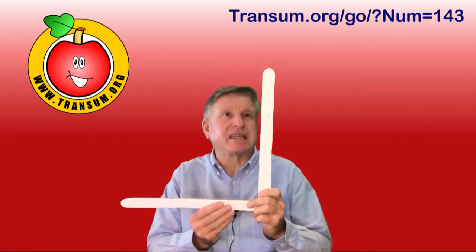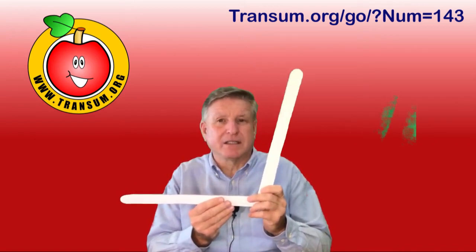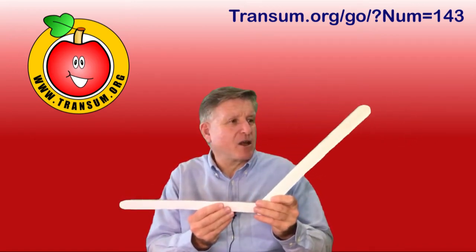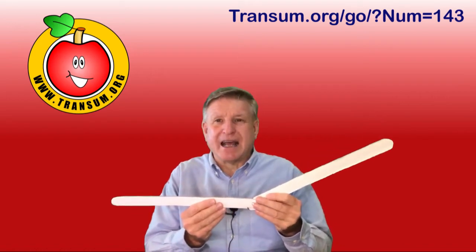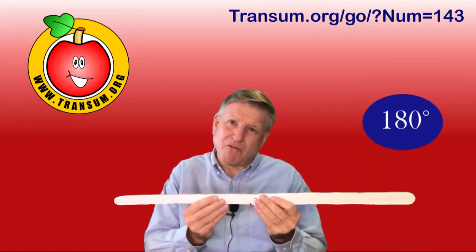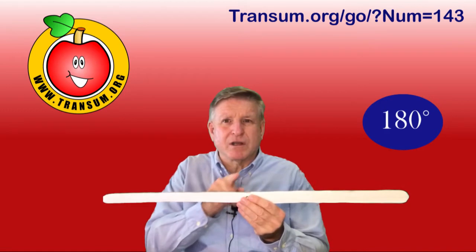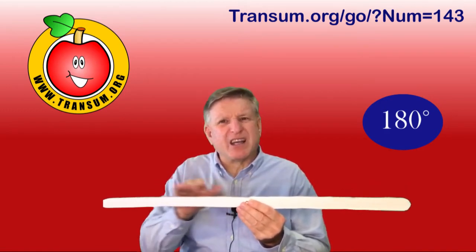If there's an exact quarter turn, that's a right angle. That's an obtuse angle, and turning sort of halfway around will give you a straight line.